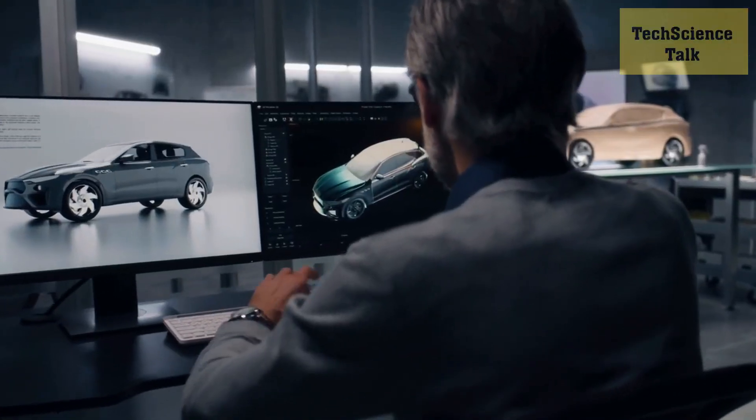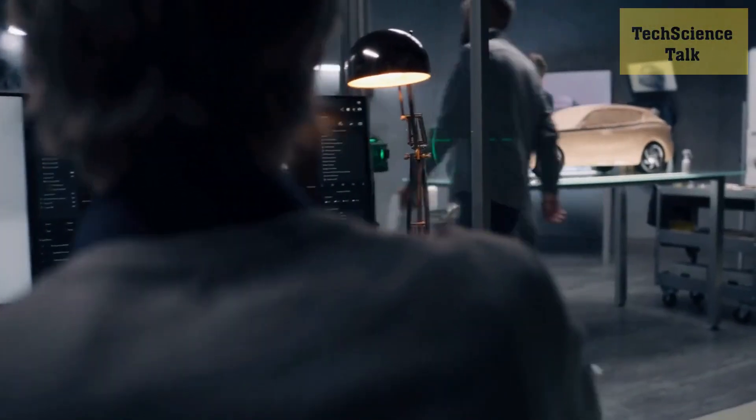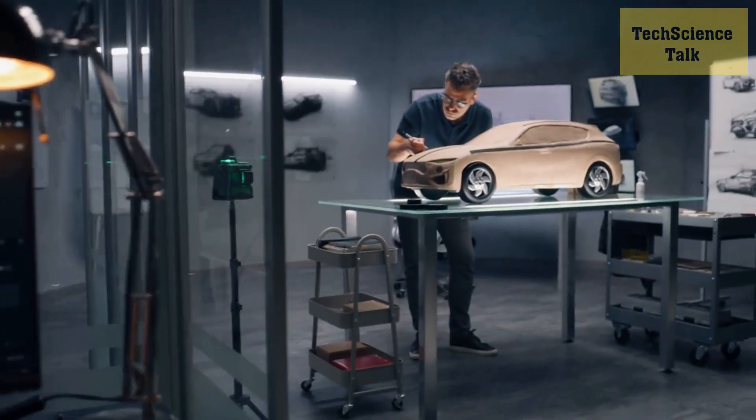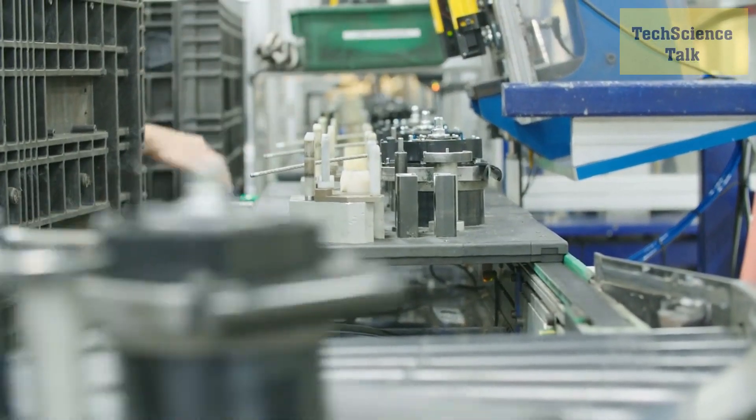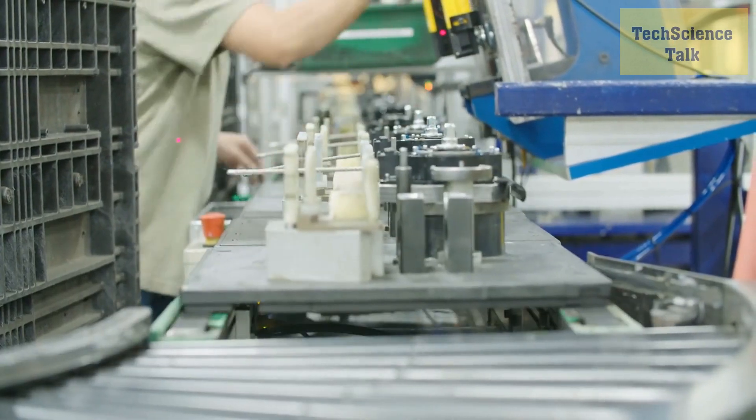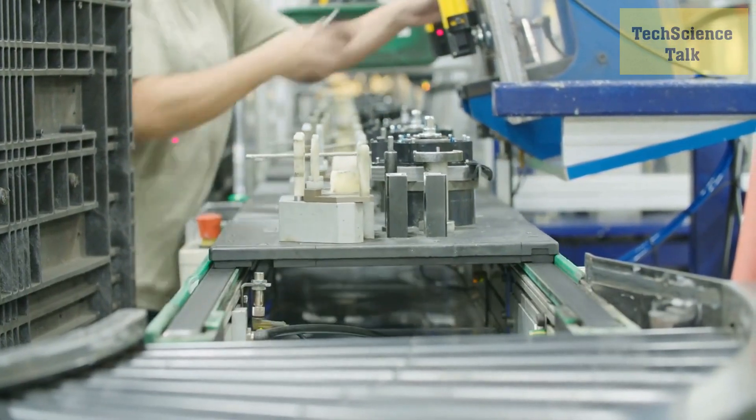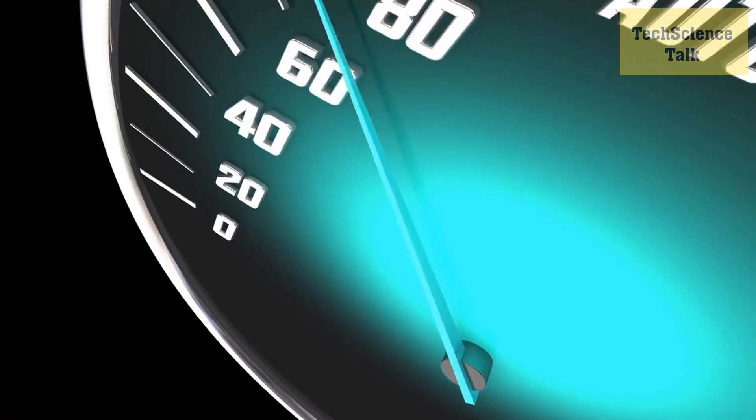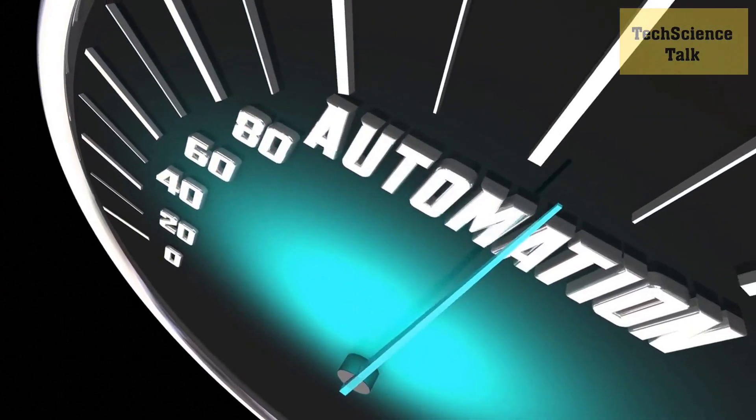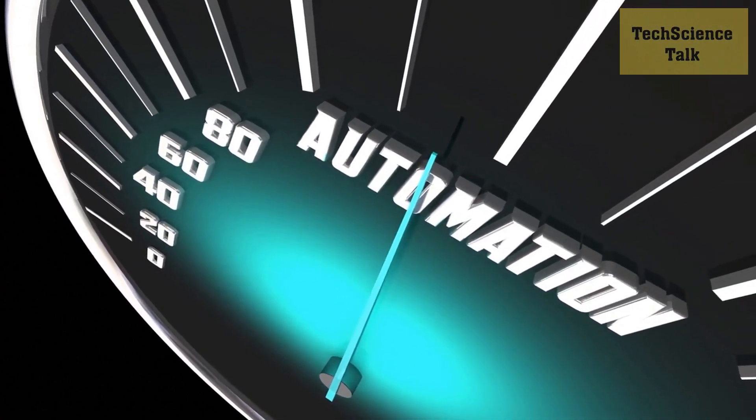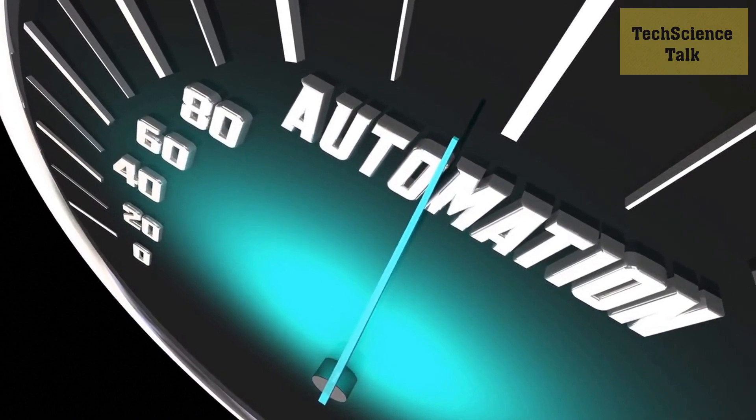In the automotive industry, 3D printing is being used to create parts and prototypes for new vehicles. This allows manufacturers to quickly test out new designs and make modifications without the need for expensive tooling. Additionally, 3D printing can be used to create customized parts for individual vehicles, such as personalized steering wheels or interior trim pieces.